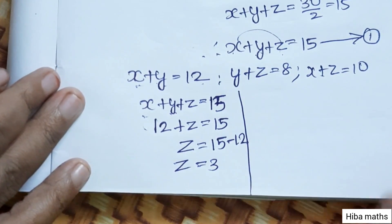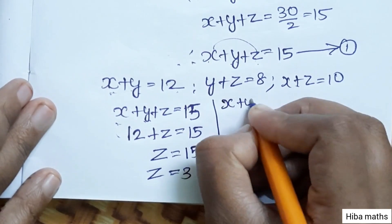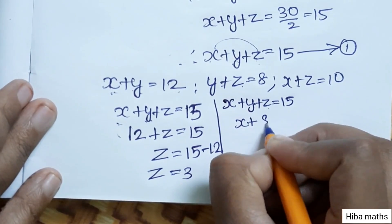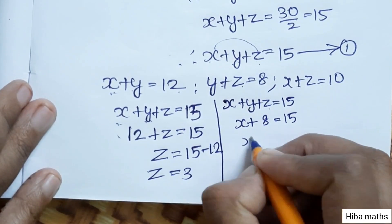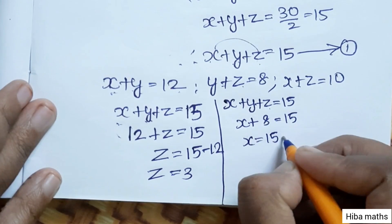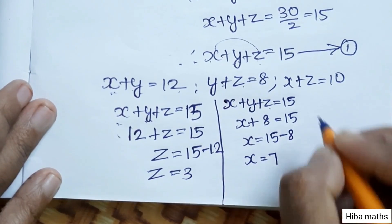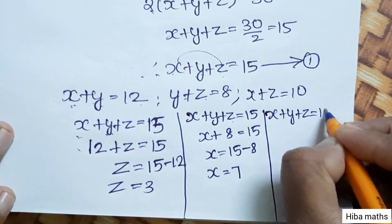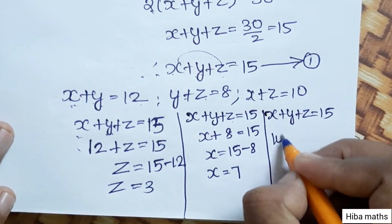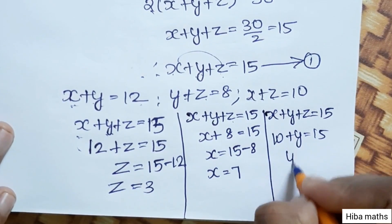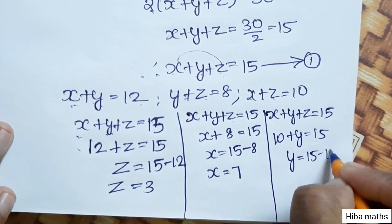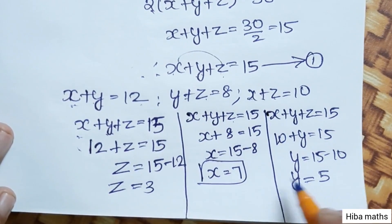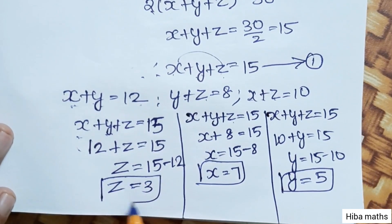Similarly, x plus y plus z equals 15. Since x plus z equals 10, we have 10 plus y equals 15. Therefore y equals 15 minus 10, so y equals 5. Then x equals 7, y equals 5, z equals 3.